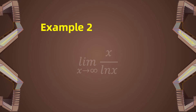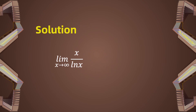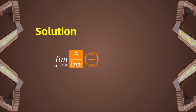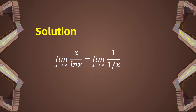Another example asks us to consider the limit of x over ln(x) as x approaches infinity. This limit is in the indeterminate form of infinity over infinity, so we can directly apply L'Hôpital's rule by taking the derivative of the numerator and denominator. This gives us 1 over (1/x), which simplifies to the limit of x as x approaches infinity, which is infinity.